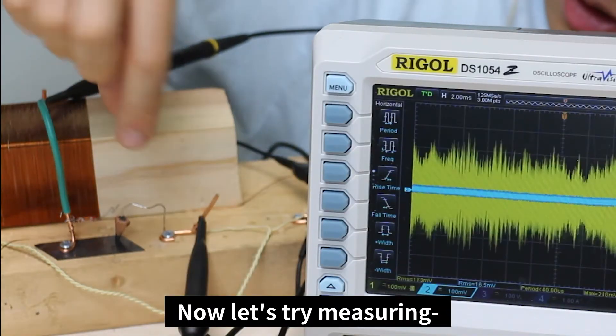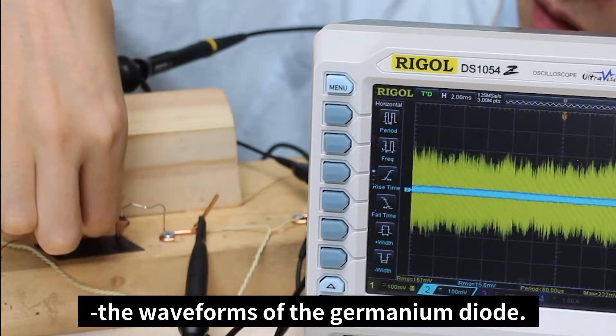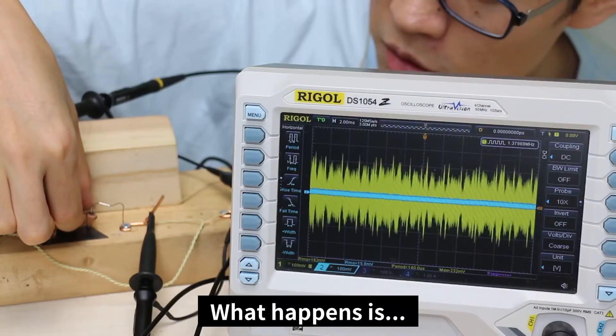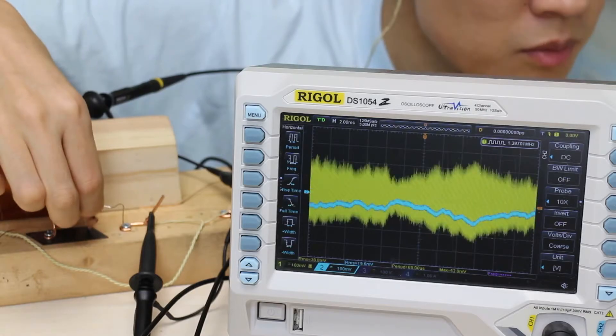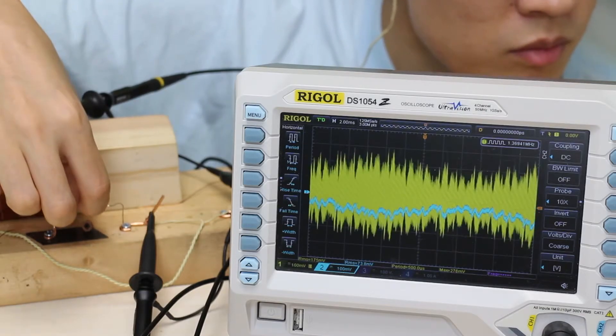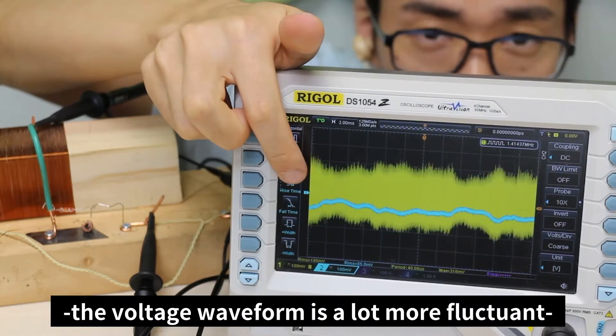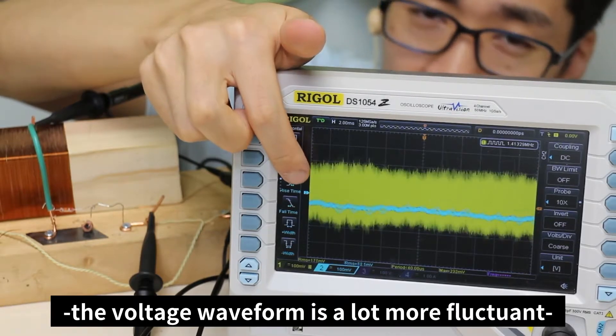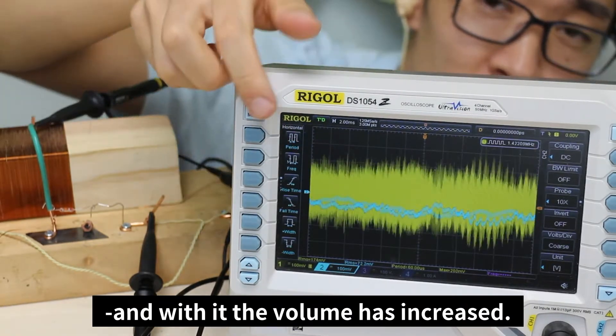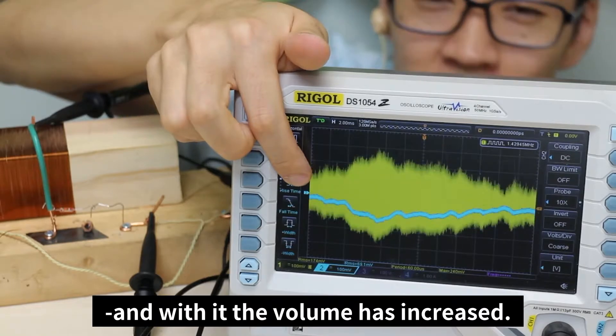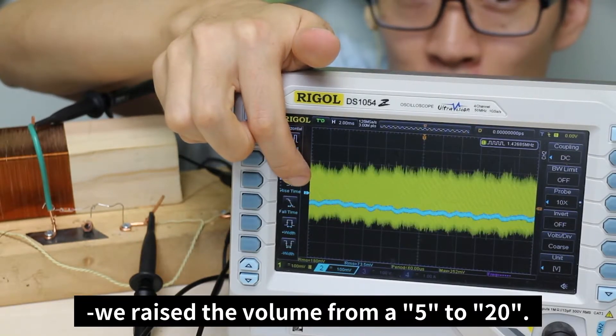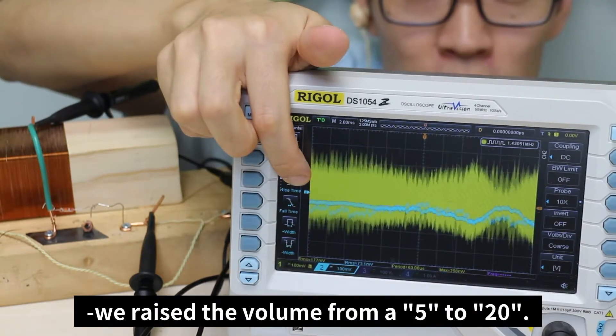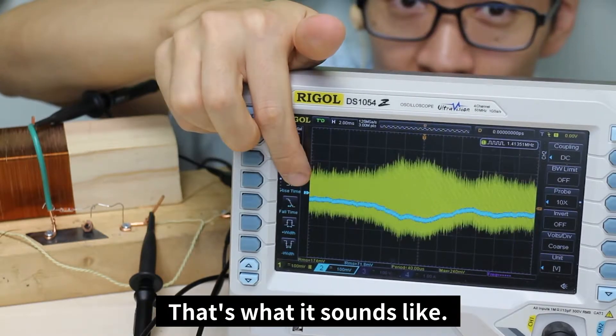Now let's try measuring the waveforms of the germanium diode. As we can see, the voltage waveform is a lot more fluctuant, and with it the volume has increased. It's almost as if we raised the volume from a 5 to a 20. That's what it sounds like.